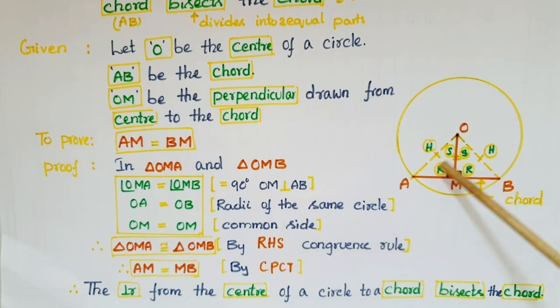Once these two triangles are congruent, we can equal the corresponding parts of these two triangles. So AM is equal to BM by CPCT. Therefore, the perpendicular from the center of a circle to a chord bisects the chord.